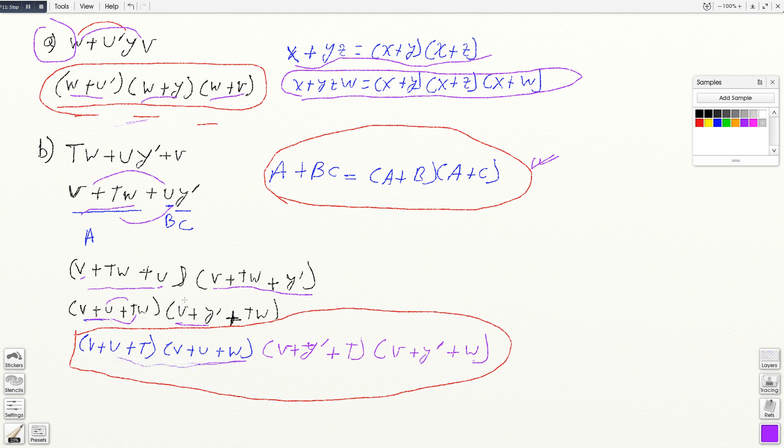On this side, V plus Y' will be a single pair, so this will be that plus T, and then again plus W. So the final answer for this one becomes V plus U plus T, then V plus U plus W, and then V plus Y' plus T, and then V plus Y' plus W. That's the answer for part b.